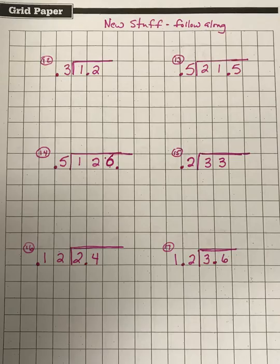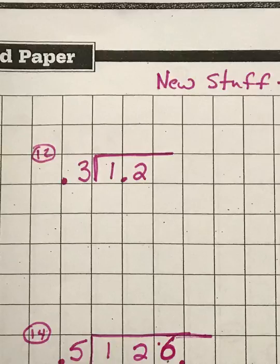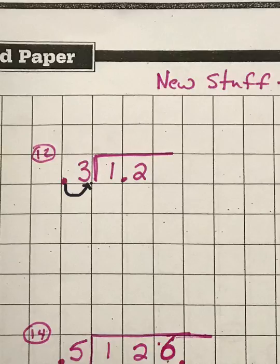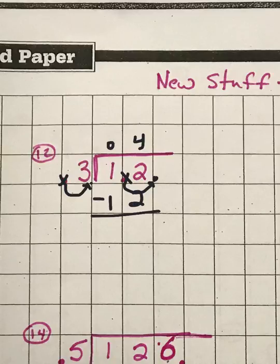The third page is new material, so follow along and do it as I do it, or give it a try yourself and check back with the video. In number 12 it's a little different because it's 1.2 divided by 0.3 — now we have a decimal on the outside. What you need to do in these cases is always make the outside into a whole number by moving the decimal point. Move the decimal point one space over — it's like multiplying by 10. Whatever you do to the outside, you have to do the exact same thing to the inside. So if you move the decimal one space over on the outside, you have to do it on the inside too. Then just divide like normal: 3 does not go into 1, but 3 goes into 12 four times, and that's 12 remainder zero. These problems are made simple on purpose so we can practice moving those decimals.